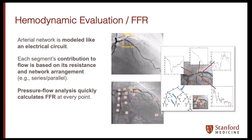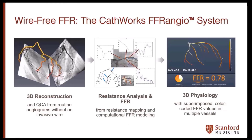This pressure-flow analysis, based on the resistance and path of flow, quickly calculates an FFR at every point — so it's not a discrete single point but a continuous measure across the coronary tree. The image on the left turns into the algorithm shown on the right, a multiple-array circuit with resistance calculated at every point based on flow through the coronary circulation on angiography. Putting it all together, those angiographic pictures create a 3D reconstruction, which is then broken down to provide resistance analysis and FFR, resulting in a 3D coronary model with output of the FFR and the myocardium at risk.